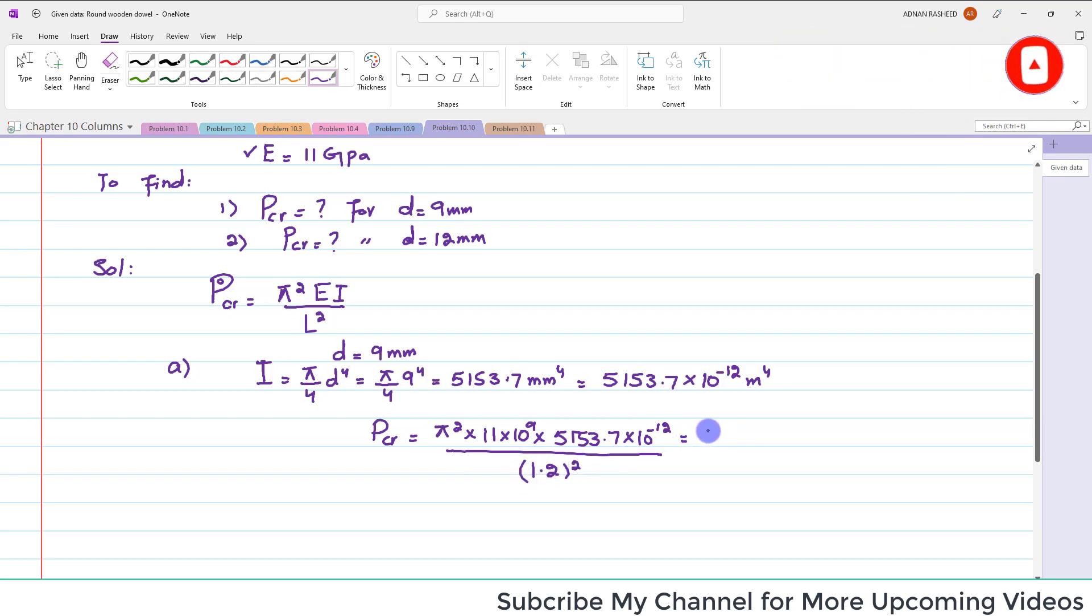So when you solve this it will give you 388.5 Newtons. So P critical for the load of diameter of 9 millimeters is equal to 388.5 Newtons.